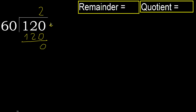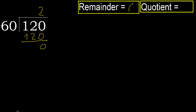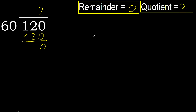Next. That is not a number, therefore finish. 0 remainder, therefore 120 divided by 60 is 2.